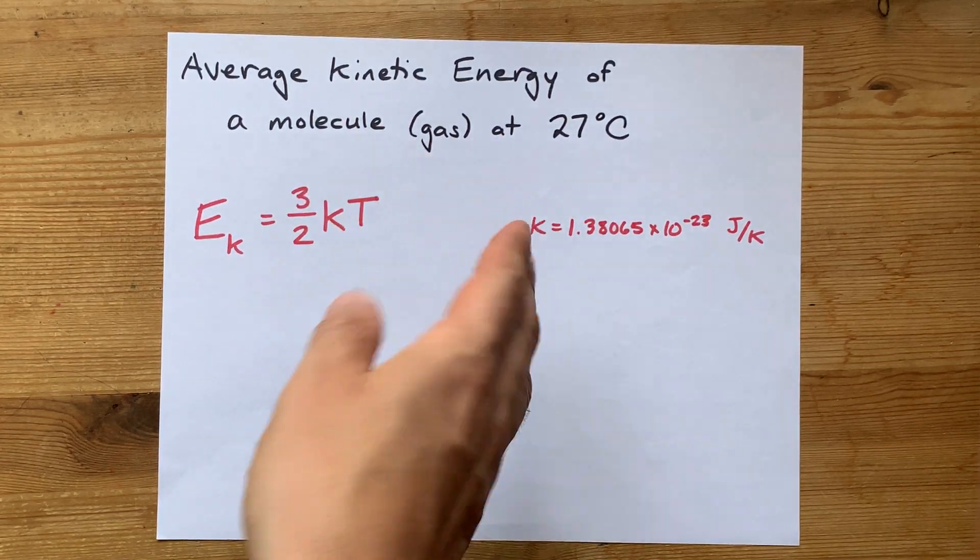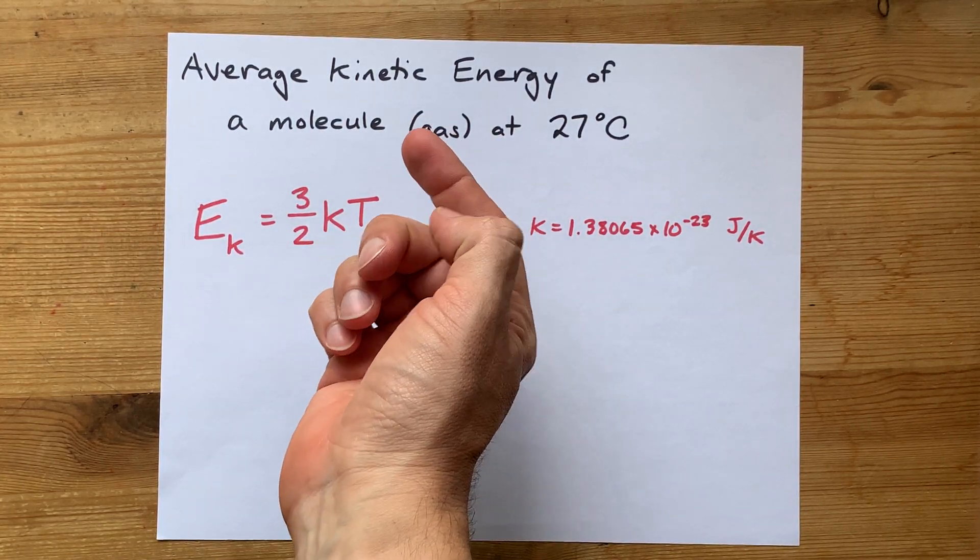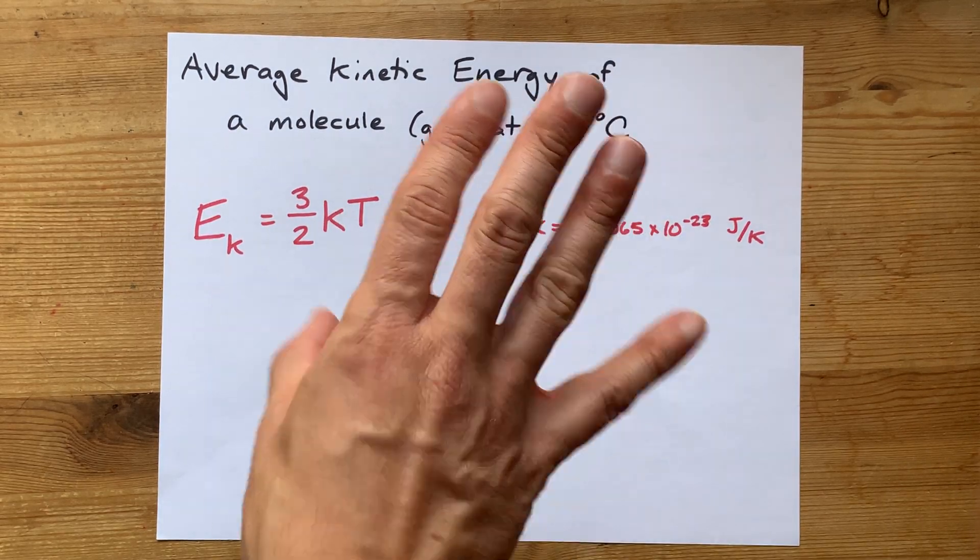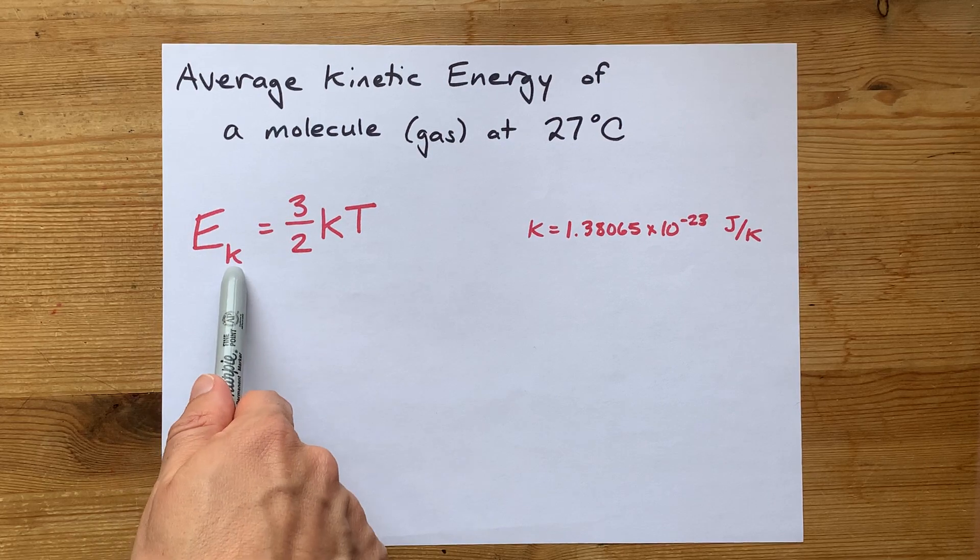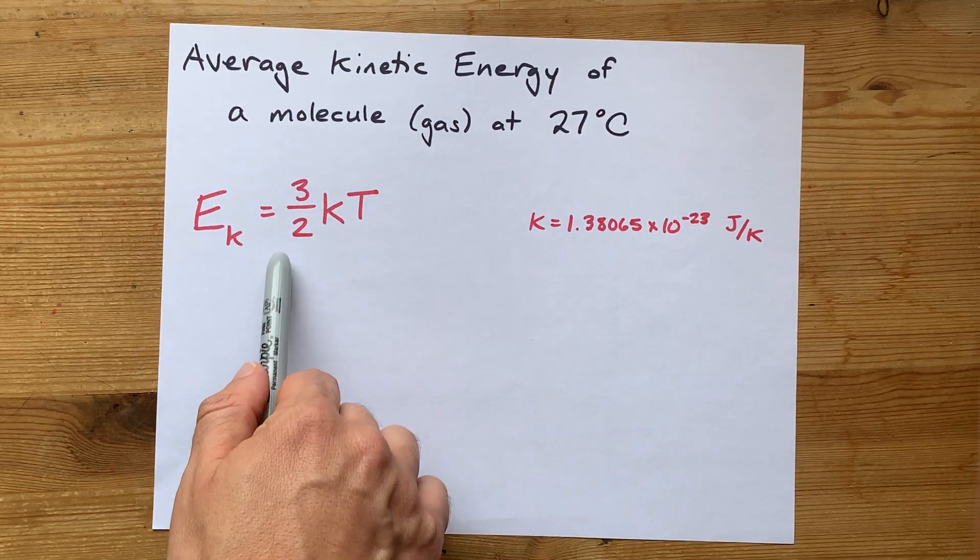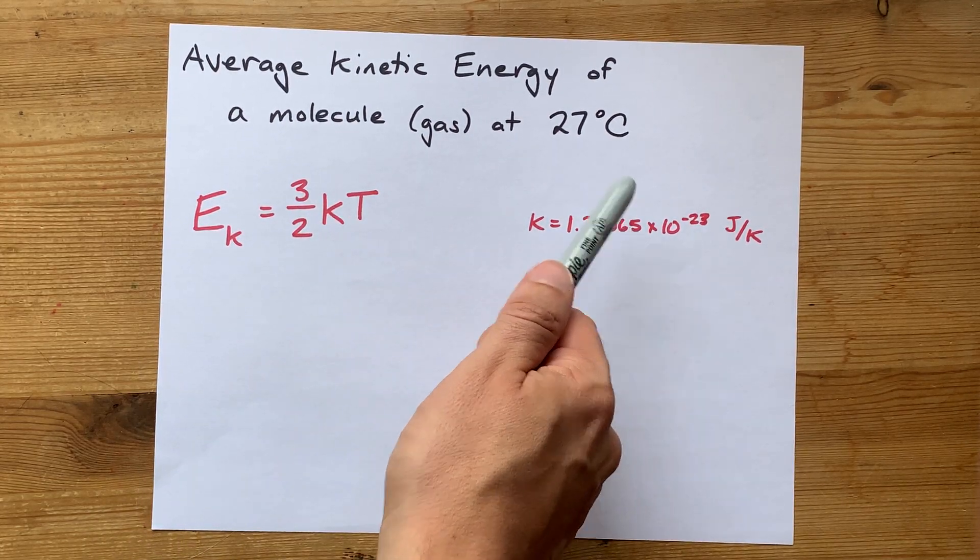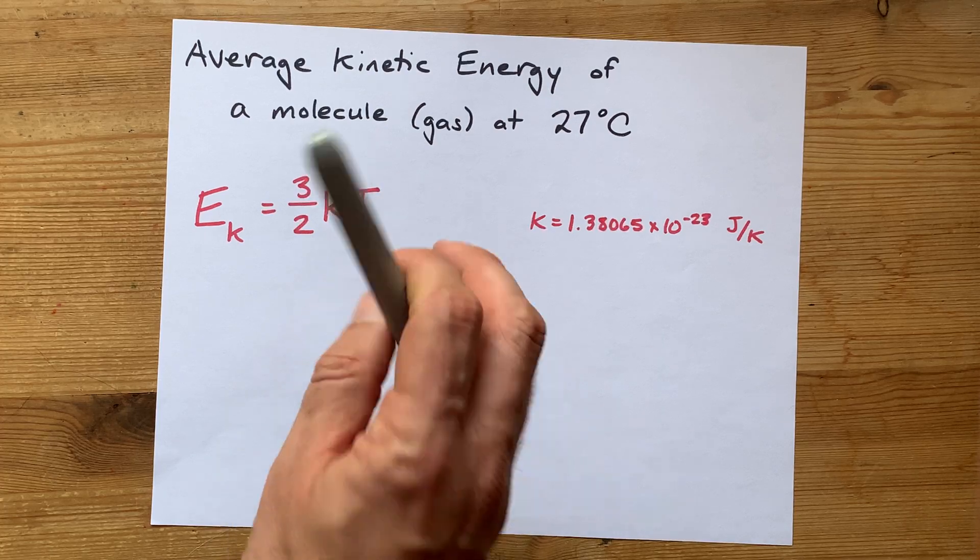The average kinetic energy of a molecule in a gas at a certain temperature is actually a pretty straightforward calculation. The formula is that the average kinetic energy is 3/2 times k, which is a constant, times the temperature in Kelvin.